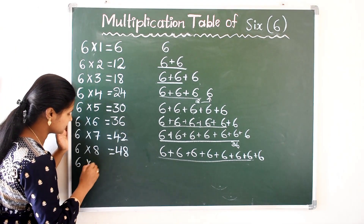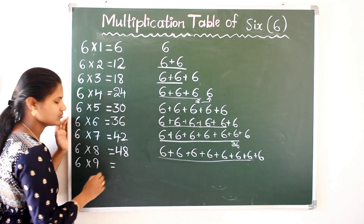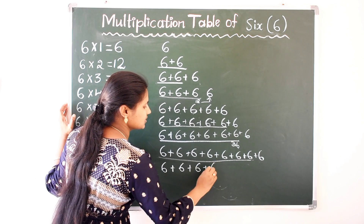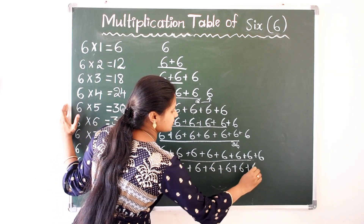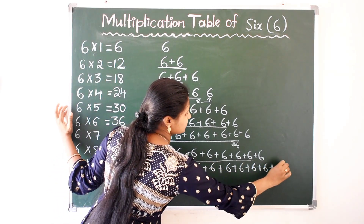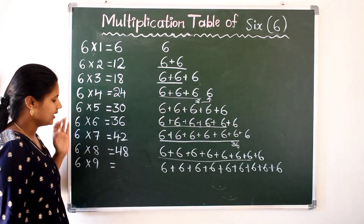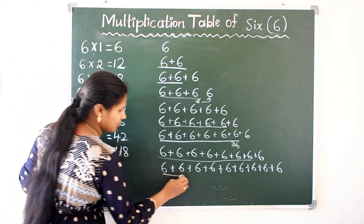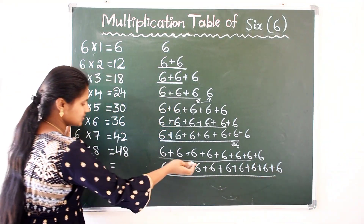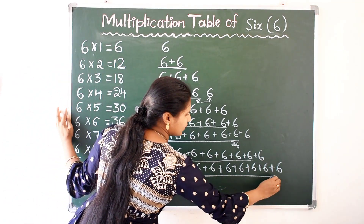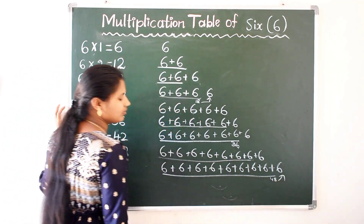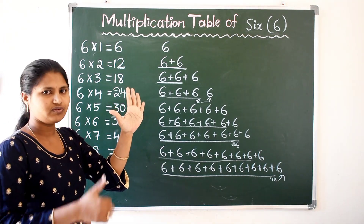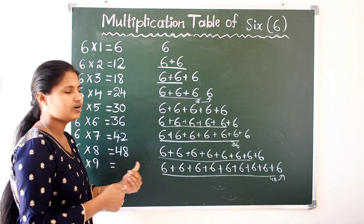Next is 6 9s are — 6 nine times. 6 nine times — how much? So we have added 6 eight times already, we got 48. 48 plus this 6 — 49, 50, 51, 52, 53, 54. So 6 9s are 54.